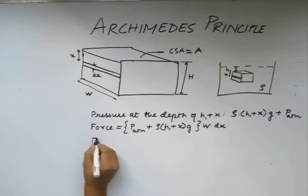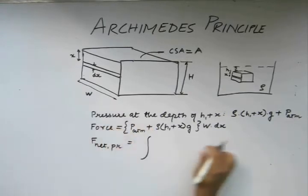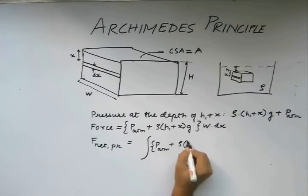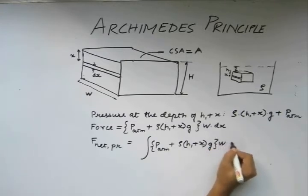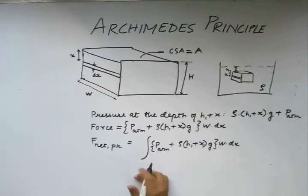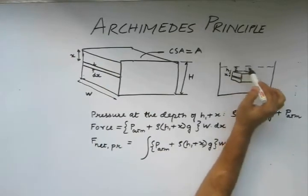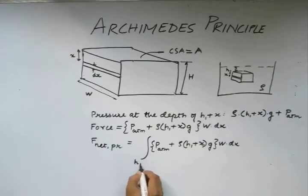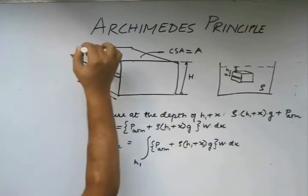So the net force due to pressure is going to be the integral of this quantity. We have to integrate it from this point to this point. At this point, considering our origin region is somewhere on the surface of the liquid, we will integrate it from the depth h1, which is from here to here, which is h1 plus capital H.